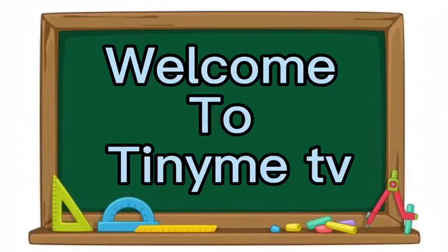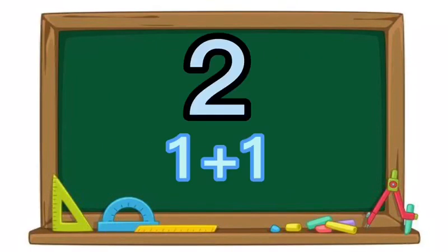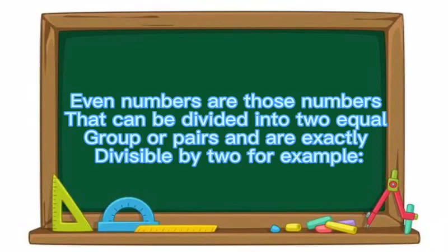Welcome to TinyMeTV. Today we are going to learn about even numbers. Even numbers are those numbers that can be divided into two equal groups or pairs and are exactly divisible by two, for example.